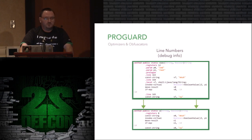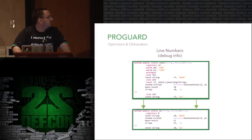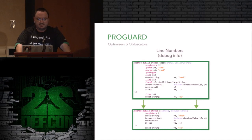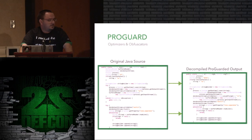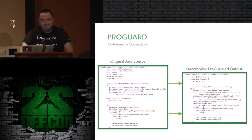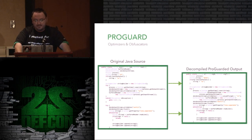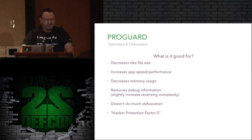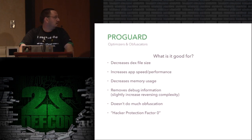Another thing ProGuard and most obfuscators will do is remove line numbers, so your stack traces would be confusing. It reduces the size of the Dex a little bit. ProGuard stays pretty easy. Here's an example of a method that will execute shell commands — left-hand side is the original source and right-hand side is the decompiled ProGuard output. As you can see, it's fairly easy to understand if you understand Java. So ProGuard — what is it good for? Pretty much absolutely nothing besides making the app smaller and faster. It doesn't provide any real obfuscation. It's got a hacker factor of zero.